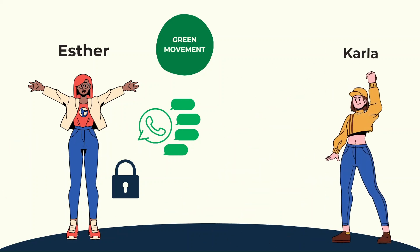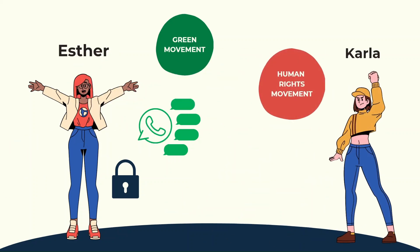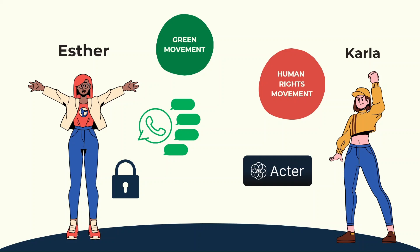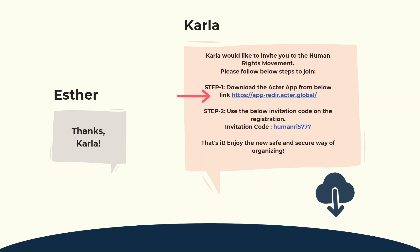Esther learns about ACTR from Carla, a friend in the Human Rights Movement, and decides to give it a try. Carla invites Esther to explore how the Human Rights Movement organizes on ACTR. Esther receives an invite message with a link to the ACTR app, including an invite code. She clicks the link, downloads the app, and opens it.